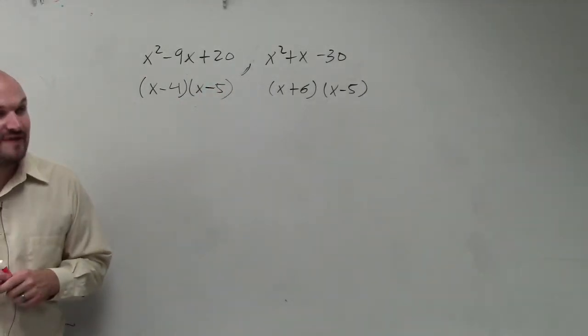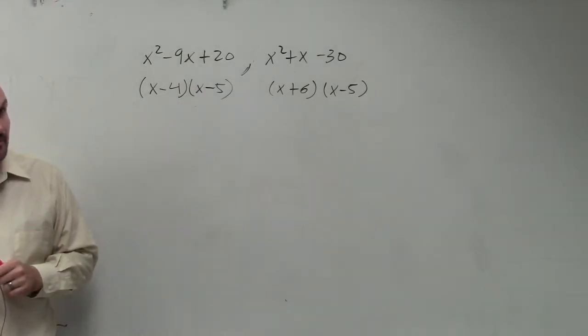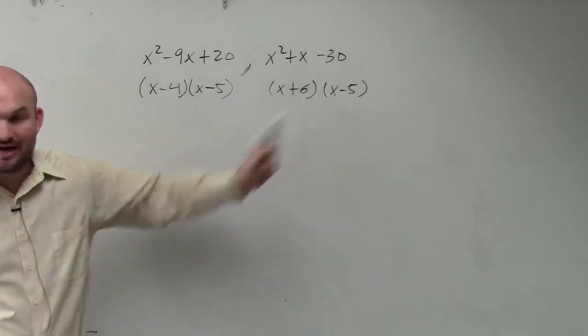All right, so now we're looking at the common factors. What is the smallest factor that both of these would all divide into, right? Well, you guys can see that they both share an x minus 5.